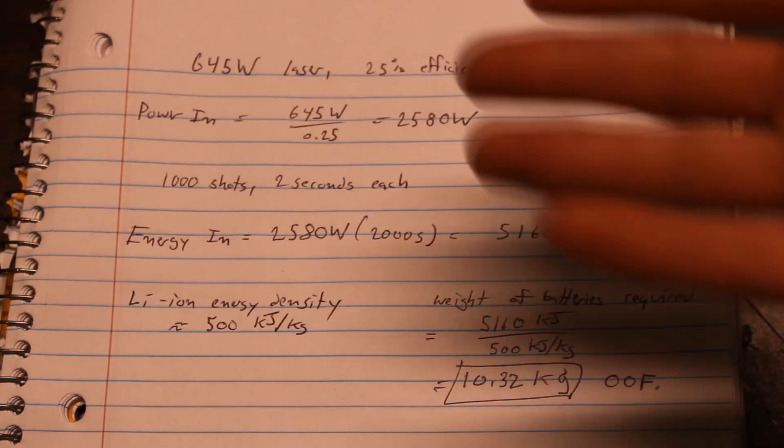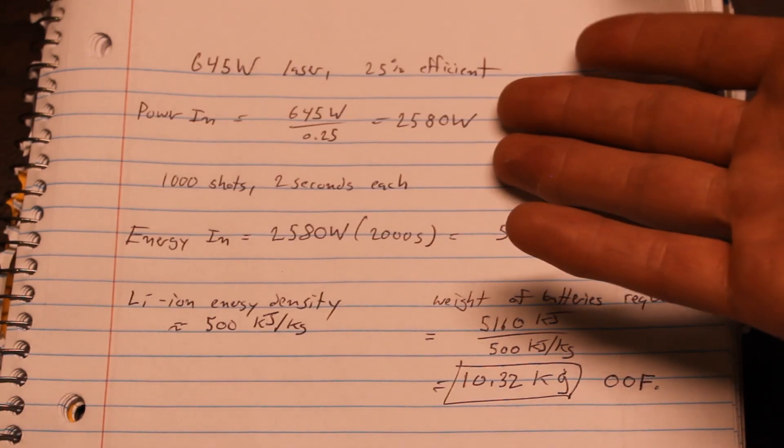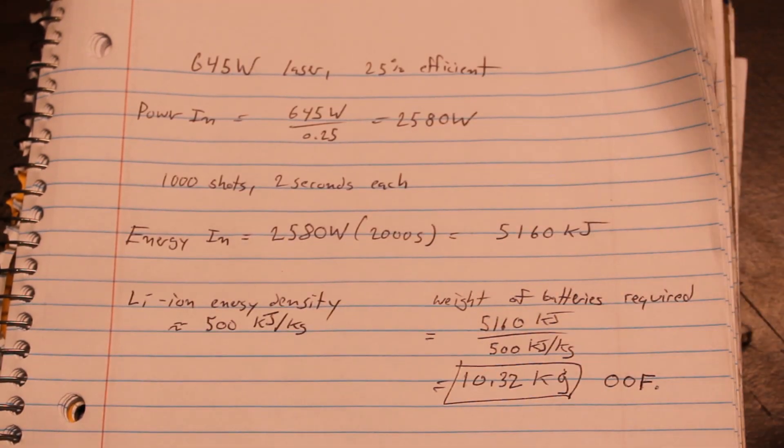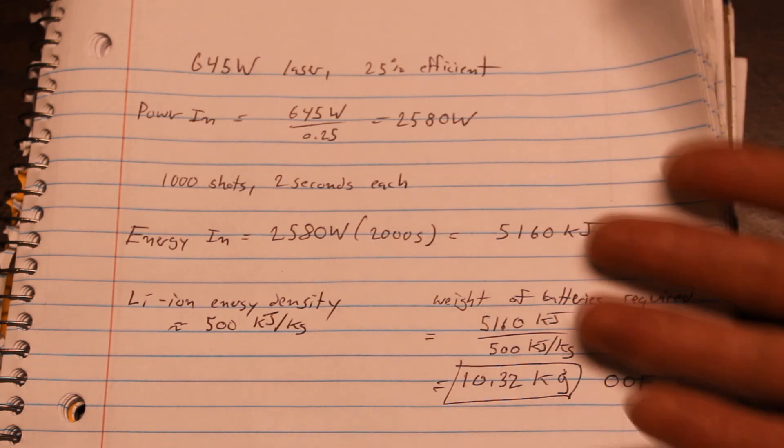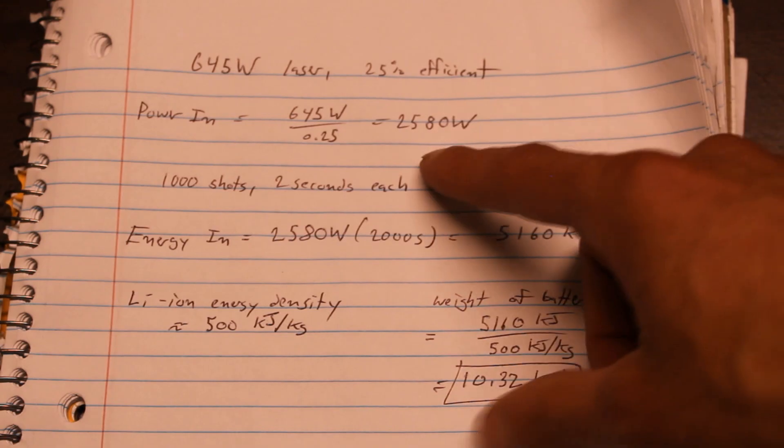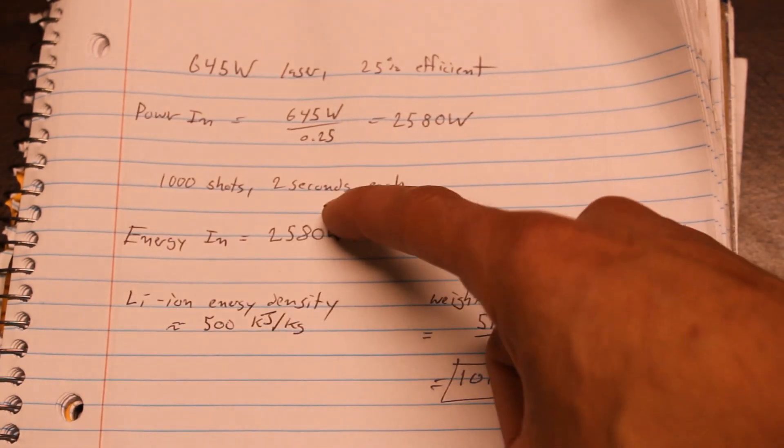Well, this company claims that this laser can shoot 1,000 shots at 2 seconds each. Now, what kind of battery pack would that require? So if we assume that this laser is 25% efficient, which is actually really good for lasers and incredibly generous for something that's portable and would require a lot of active cooling, well, then we can calculate a required input power.